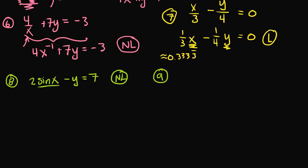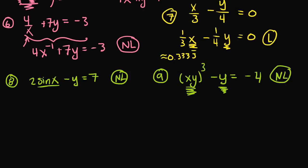Example 9: x times y, raised to the 3rd power, minus y is equal to negative 4. Our variables are x and y. First, x and y are multiplied with one another — you can't have a product of variables in a linear equation. Secondly, that quantity is raised to the 3rd power. Even though the lone y is only raised to the 1st power, the fact that x and y are multiplied together in the first term alone makes this equation nonlinear.